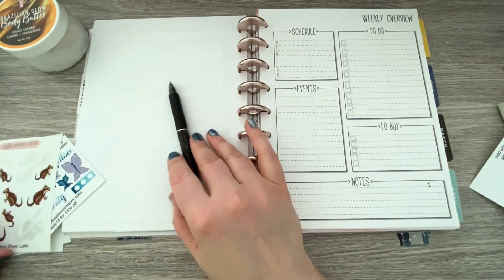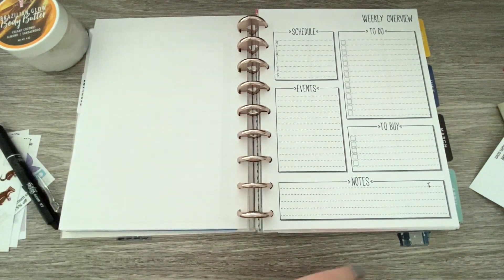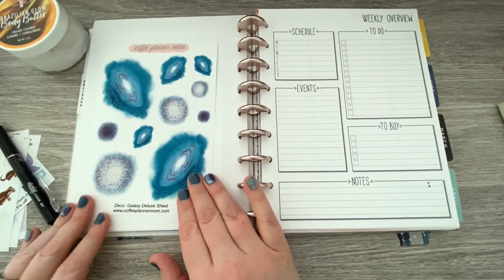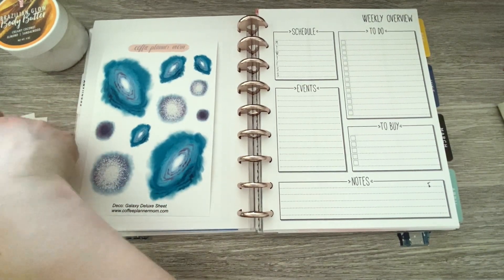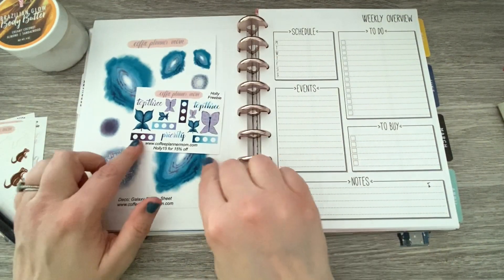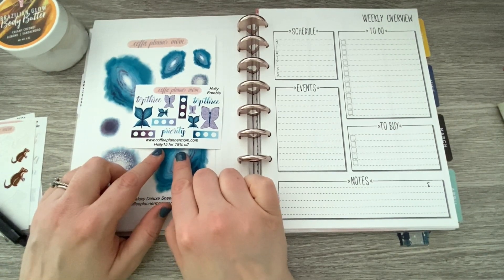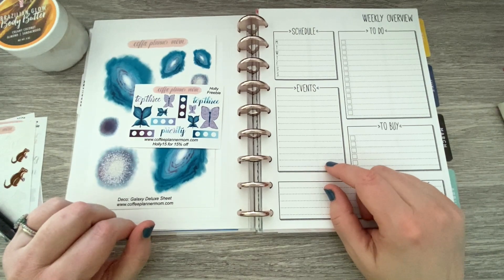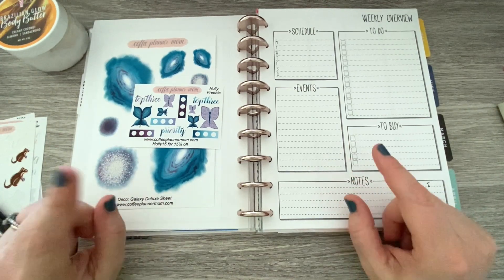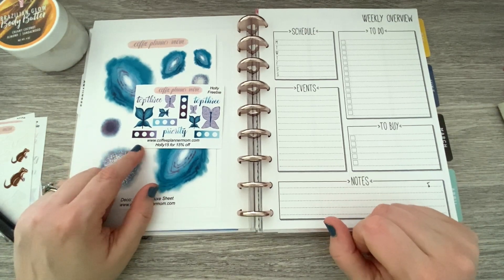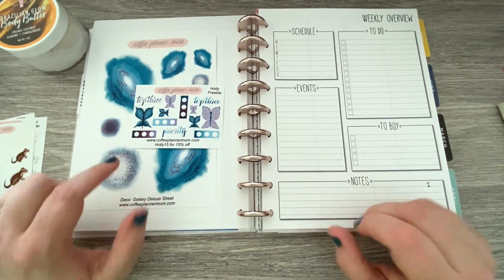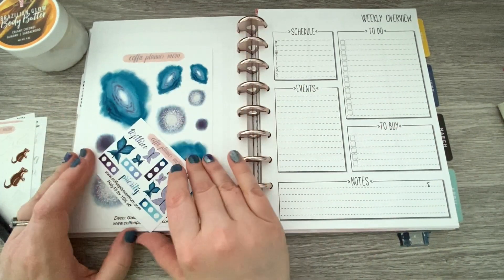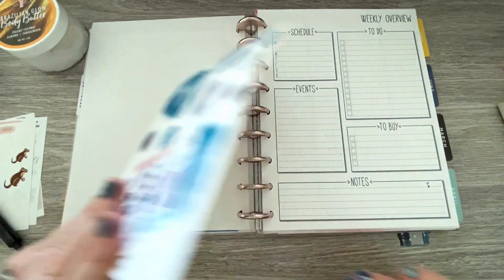Here we are at the weekly overview. Here's what I'm using this week. I'm using the Galaxy Deluxe sticker sheet because I also want to use my freebie from Coffee Planner Mom, so if you use my code HOLLY15, you can get 15% off. Also, she's going to have a new release on the 10th, so we got to make sure we write that in. Super important.